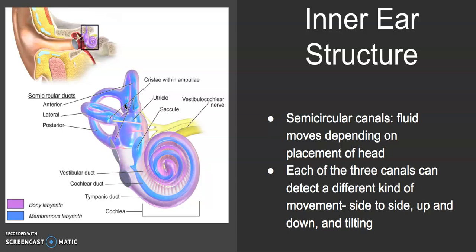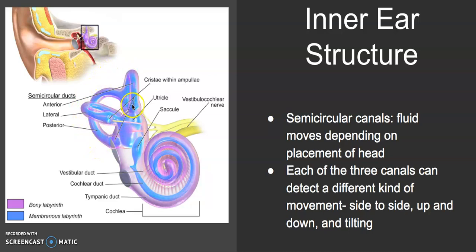Each of the canals detects a different kind of movement. One of them detects up and down — so you can imagine if your head is moving up and down, like if you were nodding, then fluid would be moving up and down through this membrane. We also have tilting, which is this one, and side to side movement, this lateral one.